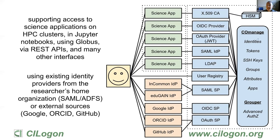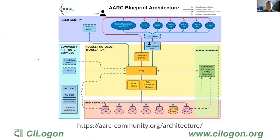We have a backend system called COmanage that manages enrollments, groups, and attributes, and that exposes information to applications through multiple APIs. We still issue many X.509 certificates, OIDC ID tokens, JSON Web Tokens, SAML attribute assertions, and we support LDAP queries. The goal is to support many APIs so science apps can plug in as needed. We're inspired by the AARC blueprint architecture as the model we follow. CI Logon fits in as a proxy where researchers log in with their credentials from national federations, and we add attributes from community attribute services and authorization policies so we can issue tokens with authorizations specific to the research community.